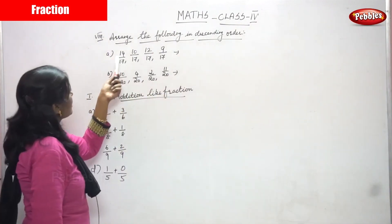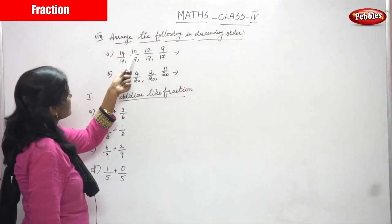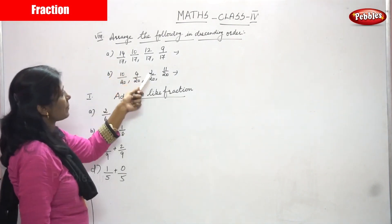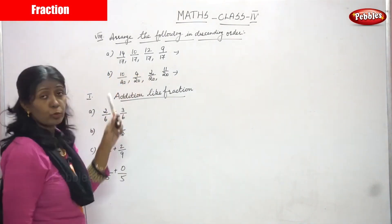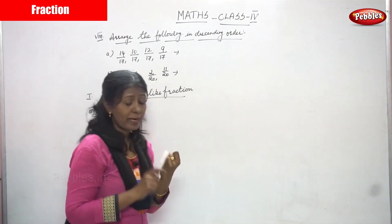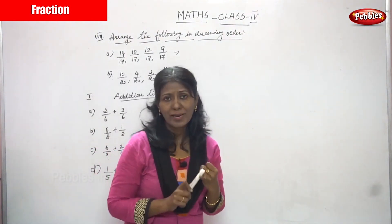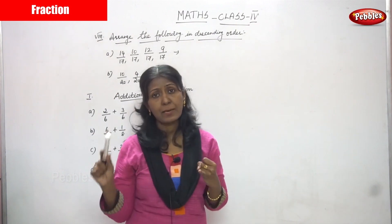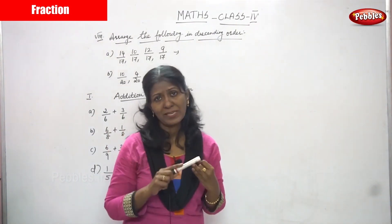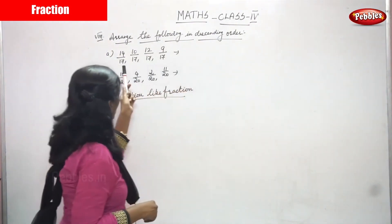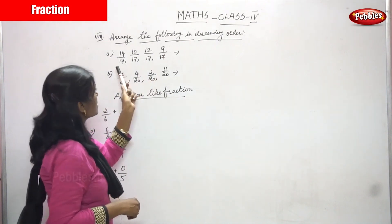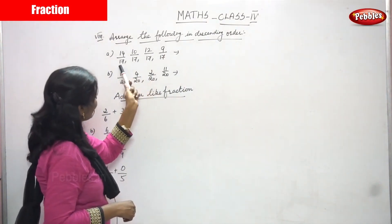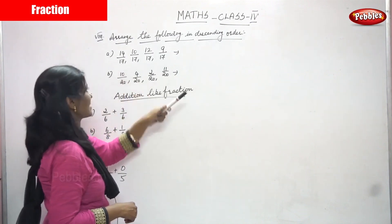The first sum is 14 by 17, 10 by 17, 14 by 17, 10 by 17, 12 by 17, 9 by 17. I've told you many times — first you have to look at the denominators. If the denominators are the same, you have to look at the numerators. So first, look at all the denominators. In this fraction, all the denominators are the same.